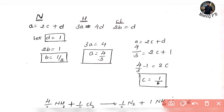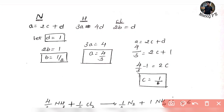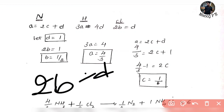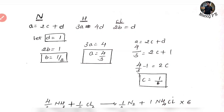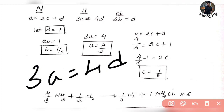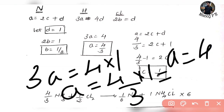So we will consider D = 1. From the chlorine equation 2B = D, B is equal to D divided by 2, which is 1/2. So B = 1/2. From the hydrogen equation 3A = 4D: D is 1, so A = 4 into 1 divided by 3, which is A = 4/3.